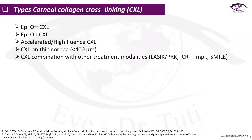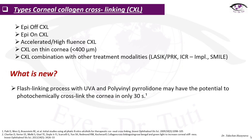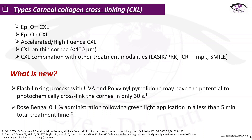Types of corneal cross-linking include epi-off, epi-on, accelerated high-fluence cross-linking, cross-linking on thin corneas less than 400 microns, and cross-linking combined with other treatment modalities such as LASIK, PRK, ICR implantation, and SMILE surgery. What is new: flash-linking with UVA and polyvinylpyrrolidone may photochemically cross-link the cornea in only 30 seconds, and Rose Bengal 0.1% with green light application in less than 5 minutes total treatment time has also been investigated.